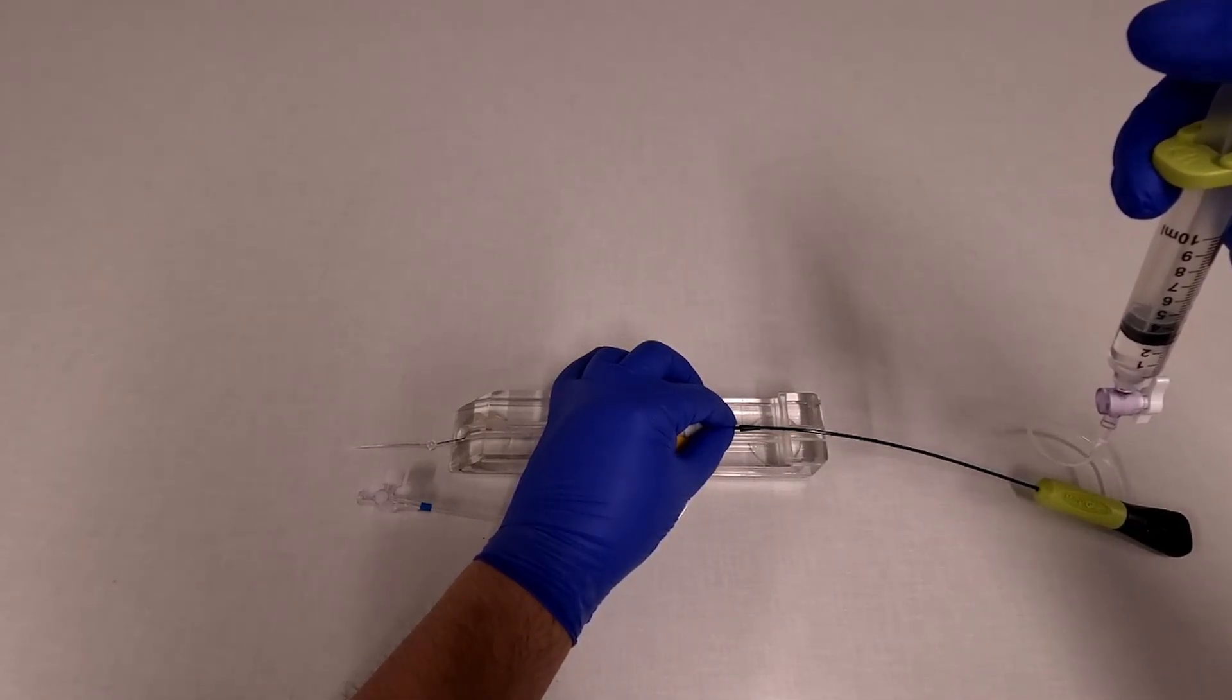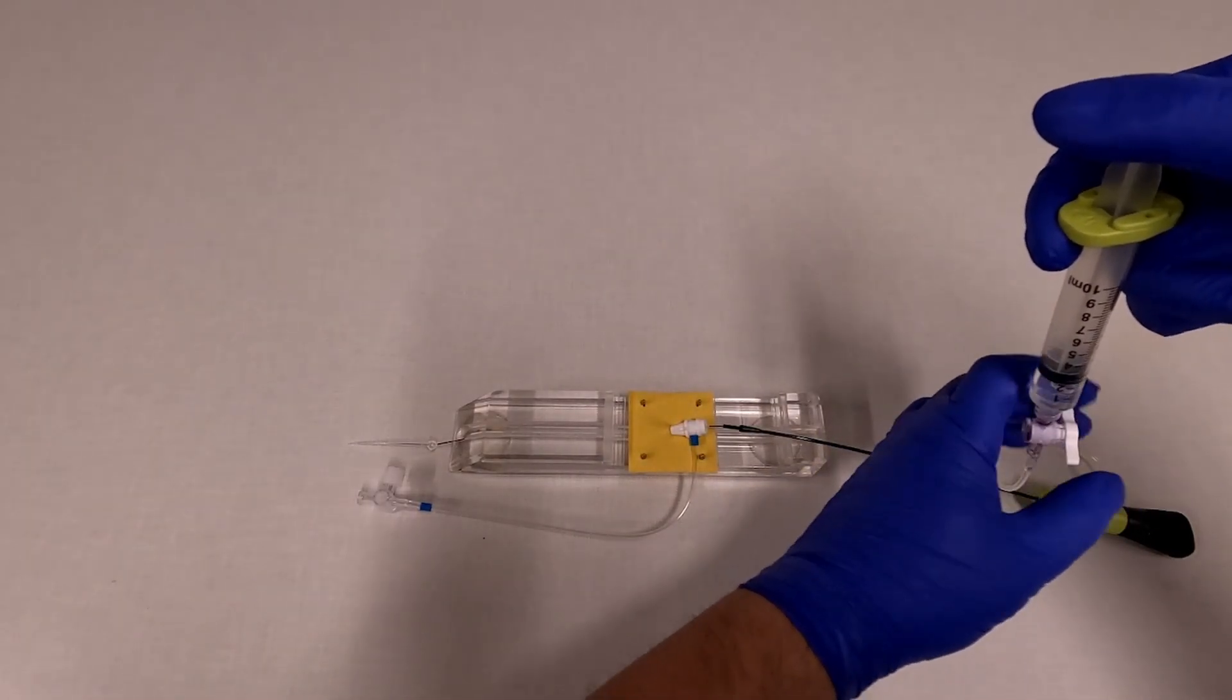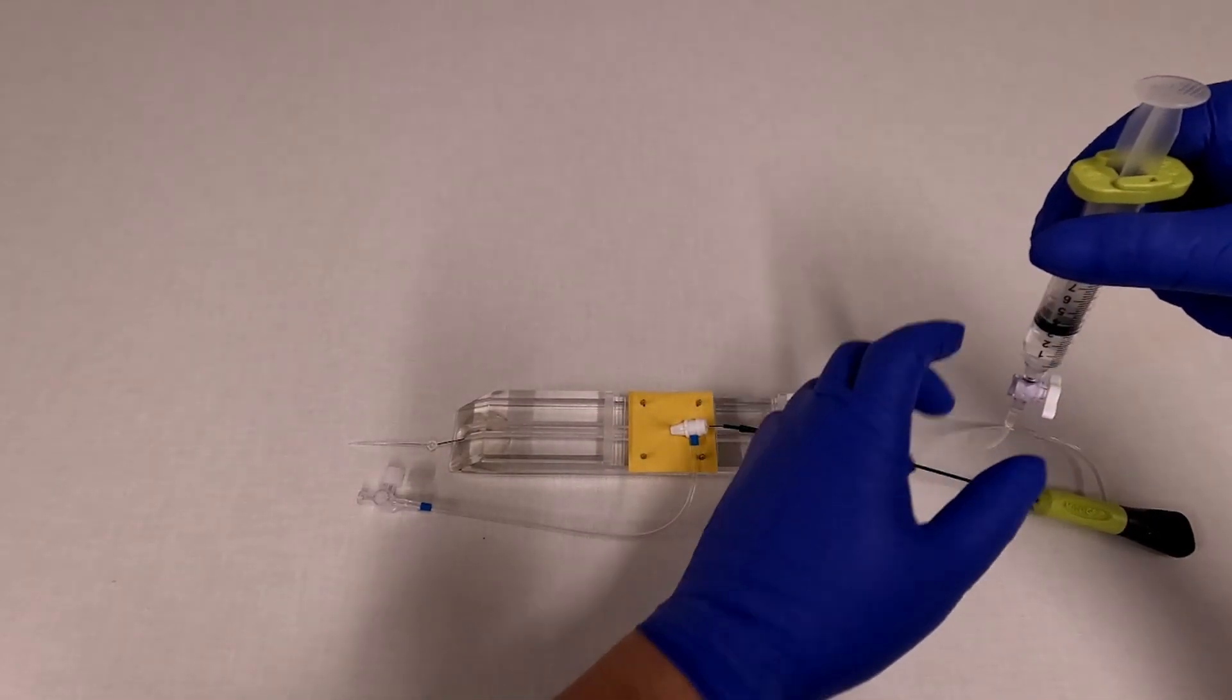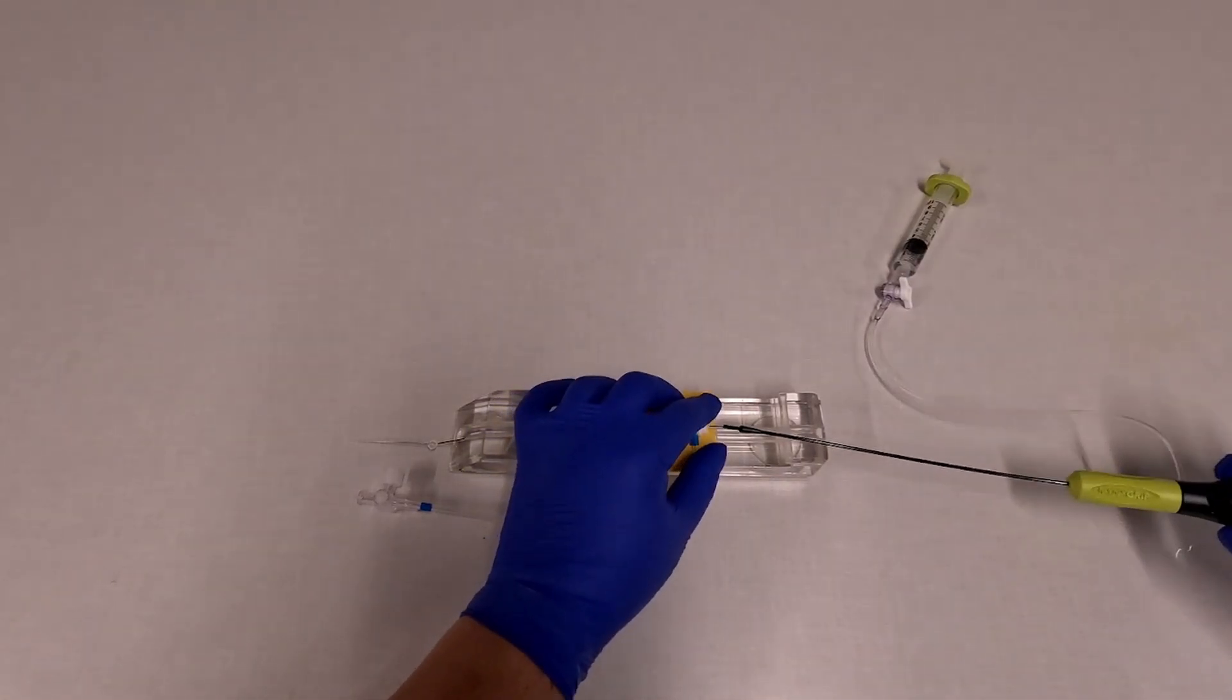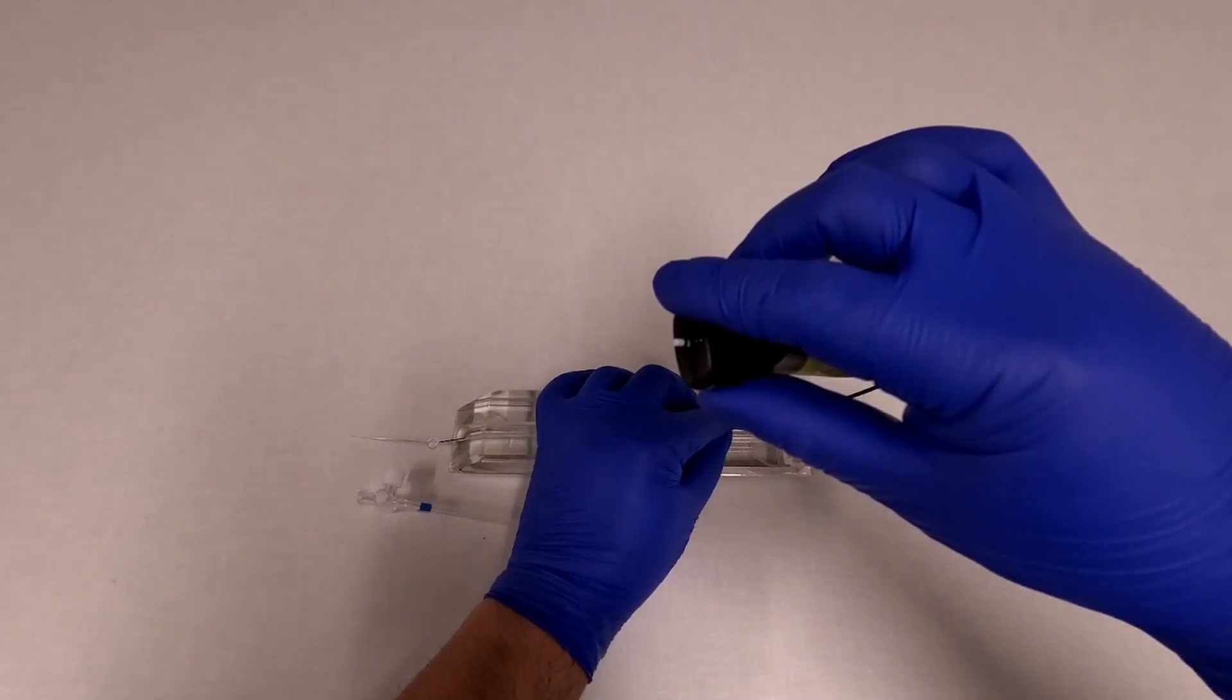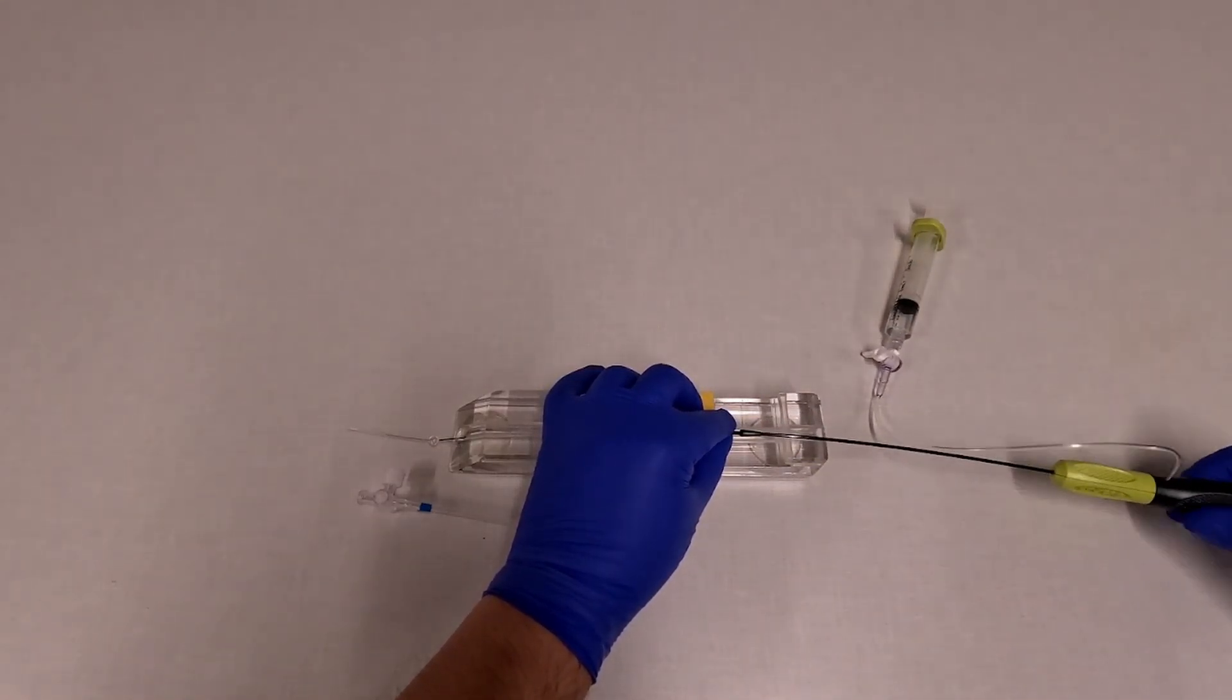So we're going to take our syringe and inflate. And then you can lock your stopcock. At this point, you'll see white, black, white at the back of the device as you see here. And this means that the balloon is inflated inside the lumen of the vessel.